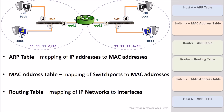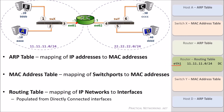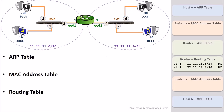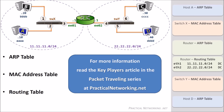Each of these tables are populated dynamically as traffic is moving through each respective device, except for the routing table. The routing table is populated prior to any traffic showing up. Since our router's ETH1 interface is configured with the IP address 11.11.11.1, our router knows that ETH1 is directly connected to the 11.11.11.0/24 network. Similarly, since ETH2 is configured with 22.22.22.1, the router knows ETH2 is directly connected to the 22.22.22.0/24 network. For more information about any of these tables, take a look at the key players article in the packet traveling series at practicalnetworking.net.